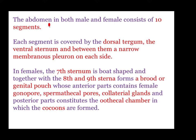The abdomen in both male and female consists of ten segments. Each segment is covered by a dorsal tergum, a ventral sternum, and between them a narrow membranous pleuron on each side. In the female, the seventh sternum is boat-shaped and together with the eighth and ninth sterna forms a brood or genital pouch, whose anterior part contains the female gonopore, spermathecal pore, and collateral glands.